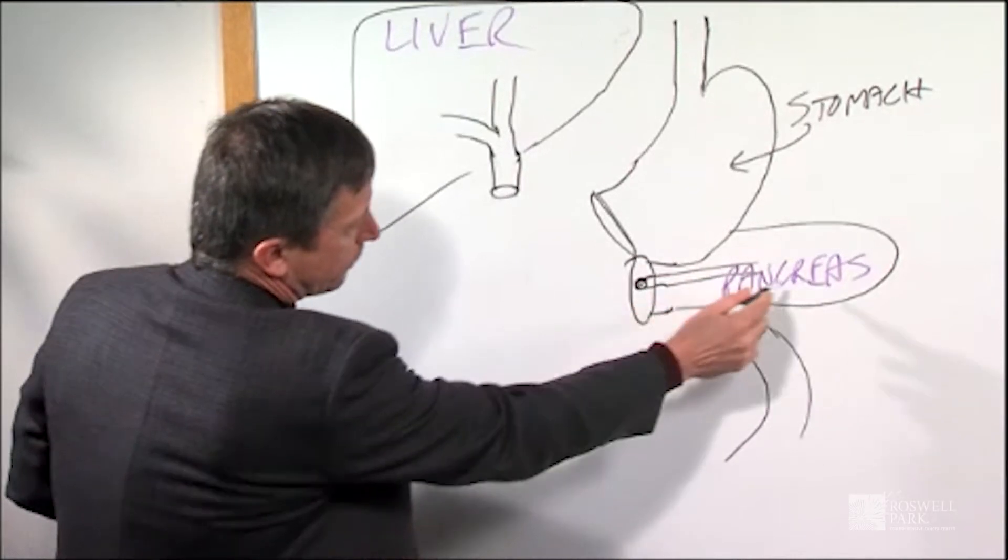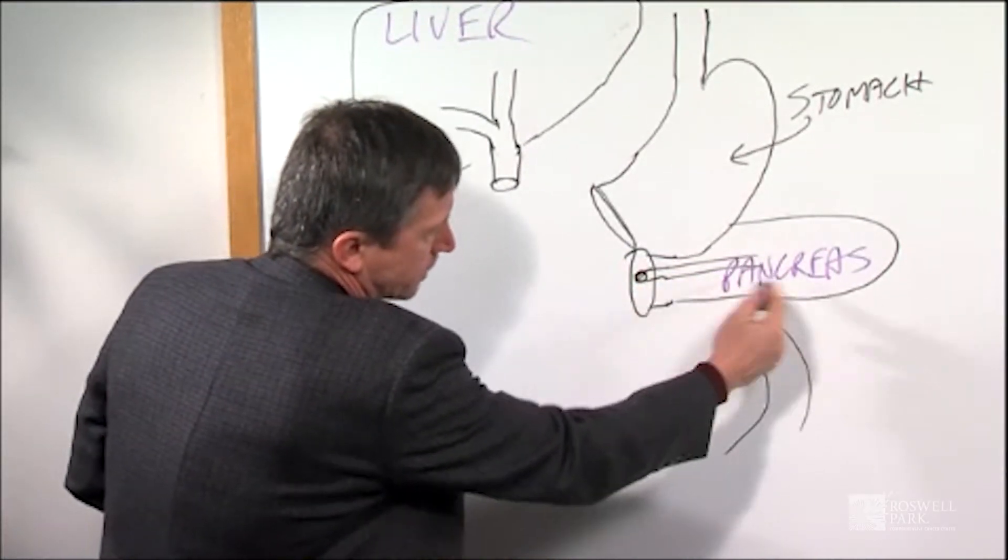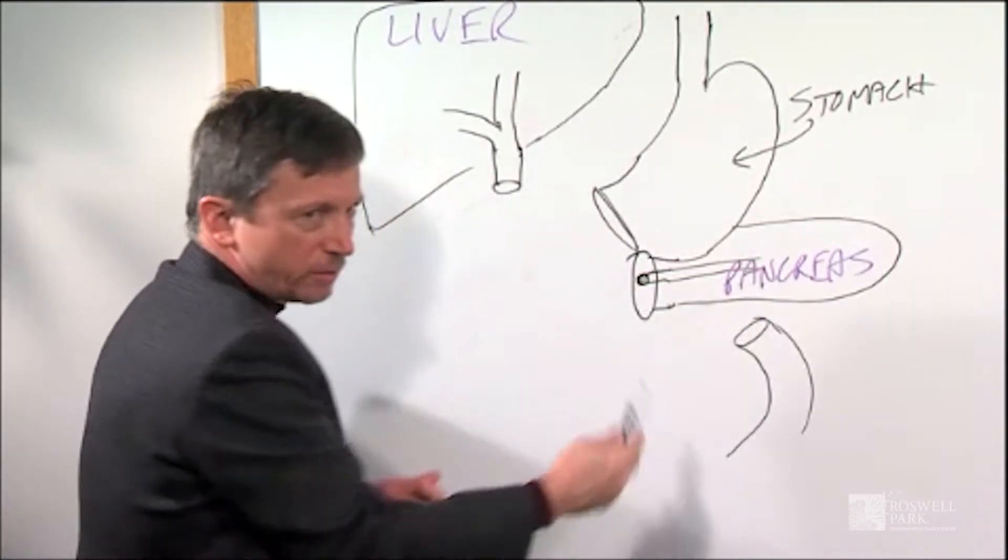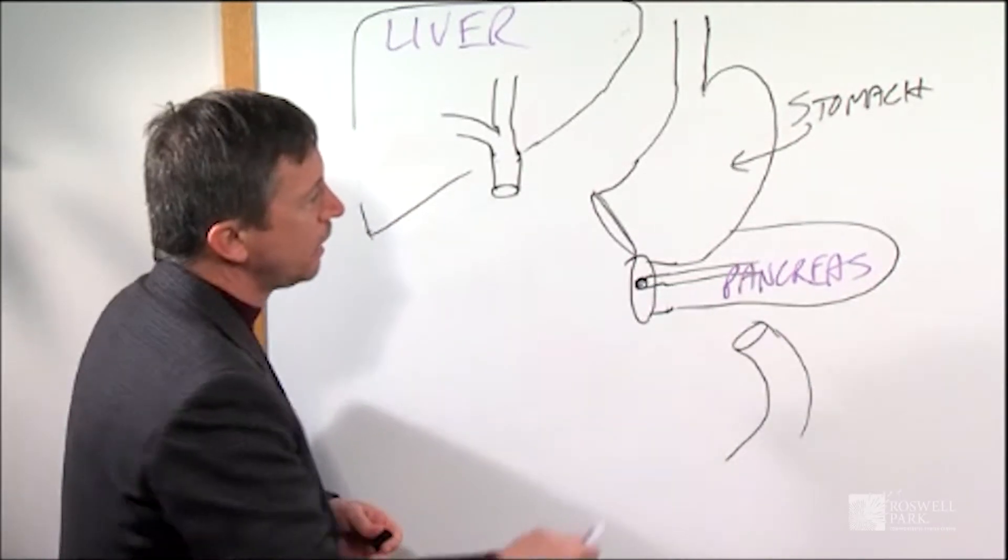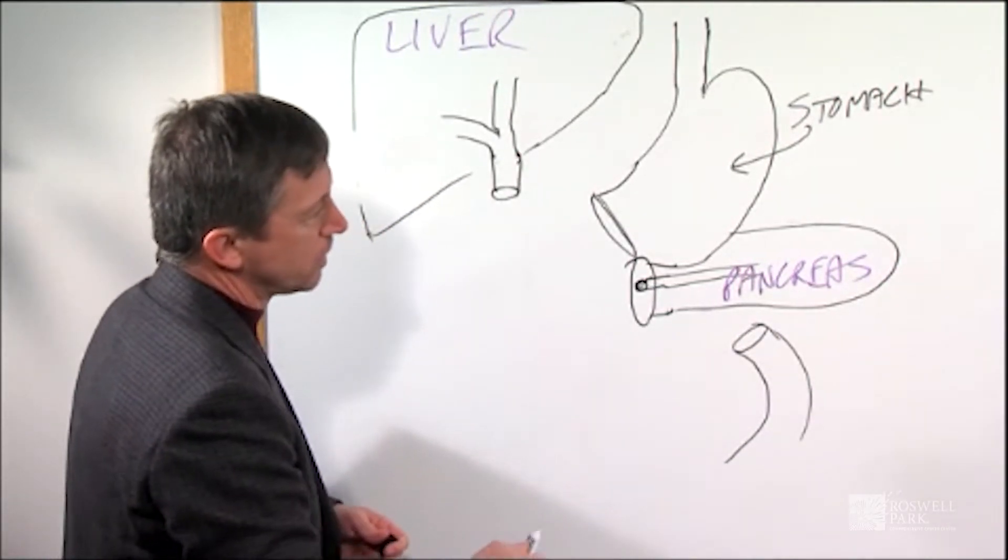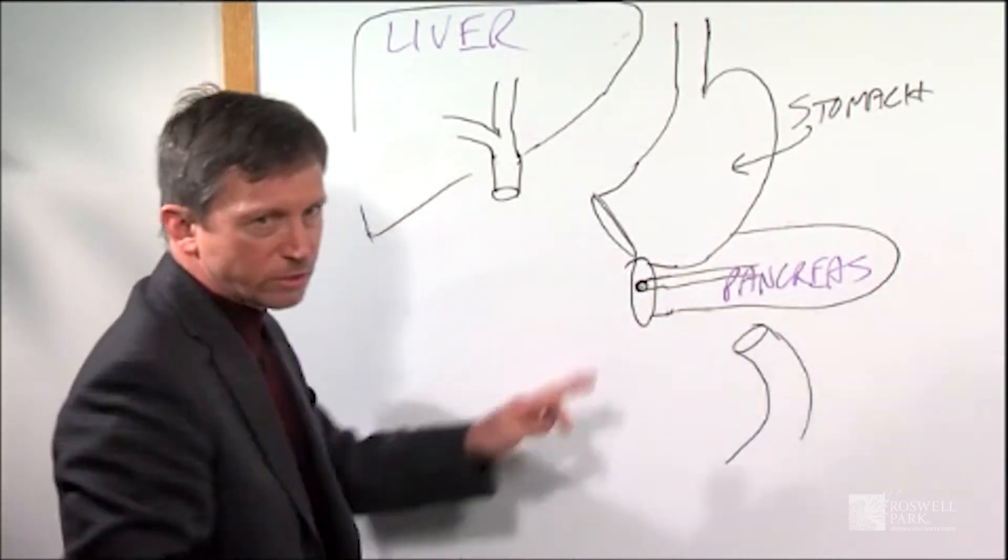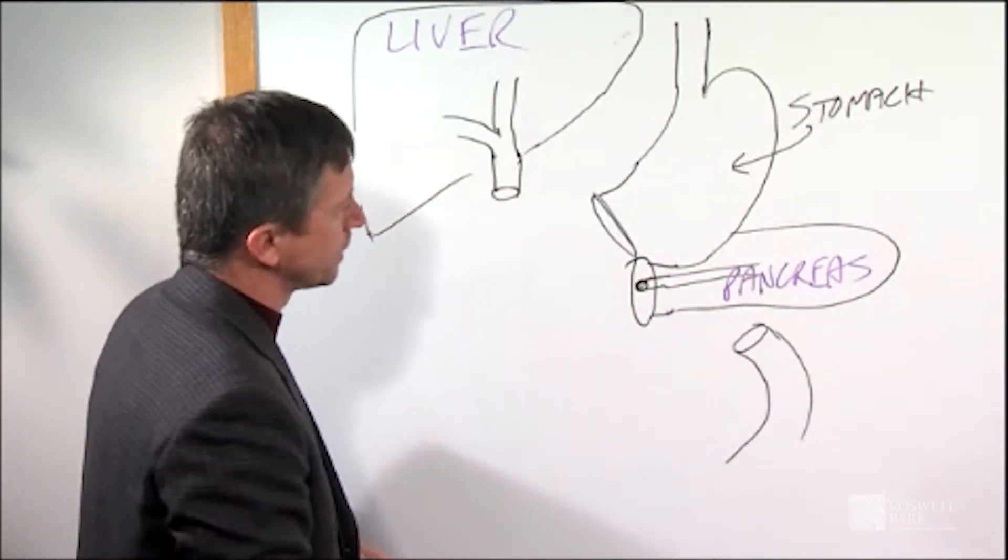So what you have is the tail of the pancreas, which is about 50% of the pancreas, and this is the part of the pancreas that does make insulin. It also makes digestive juice. So many patients can do just fine with the tail of the pancreas.